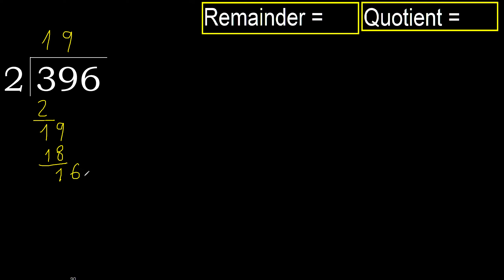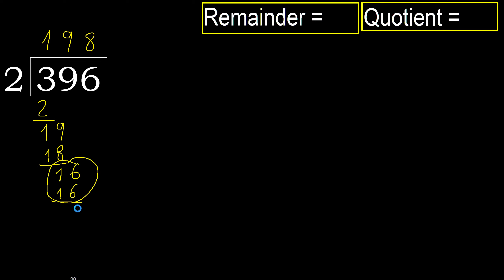Next: bring down 6, making 16. 2 multiplied by 8 is 16, which is not greater. Subtract.